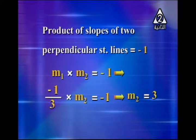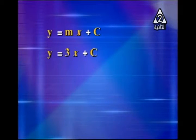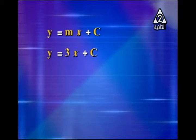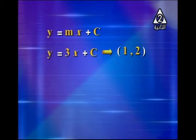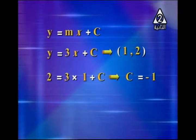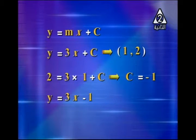The slope of the required line is 3, so y = 3x + c. Substituting the point (1, 2): 2 = 3(1) + c, giving c = −1. Therefore the equation of the straight line passing through (1, 2) with slope 3 is y = 3x − 1.